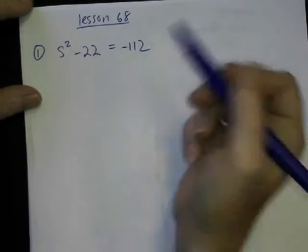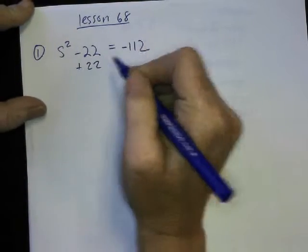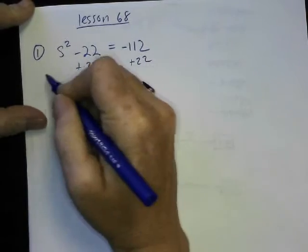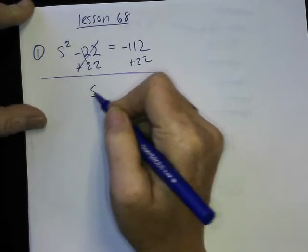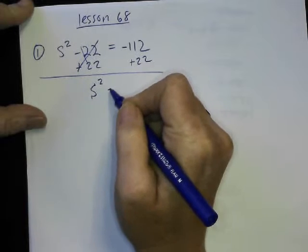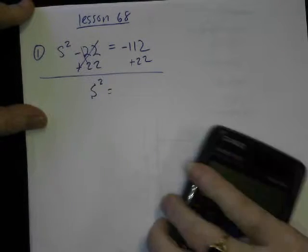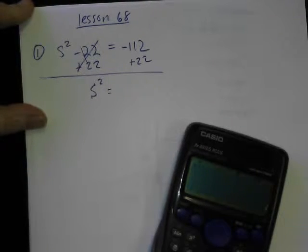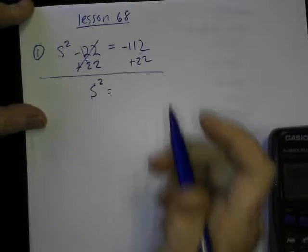I'm just going to, I think I'll just add 22 to both sides. And then, that's an S, S squared. What is that? 112 and 22. I think that gives me negative 90.